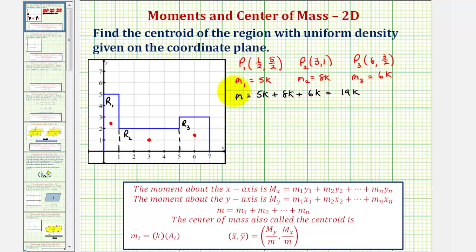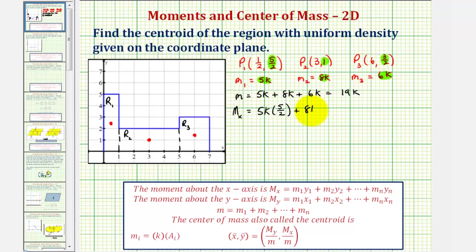Next we'll find the moment about the x-axis. When finding the moment about the x-axis, we use the y-coordinates because they tell us how far the point masses are from the x-axis. So we have 5k times five-halves, plus 8k times one, plus 6k times three-halves. This comes out to 59k/2.